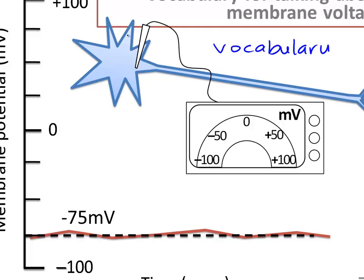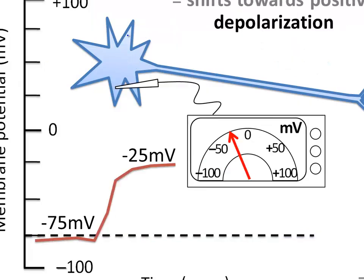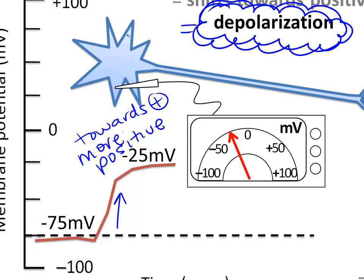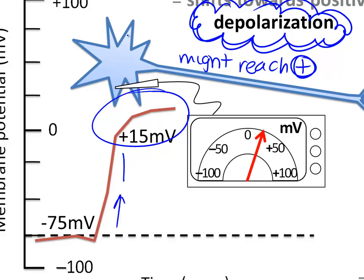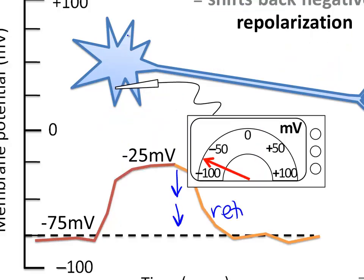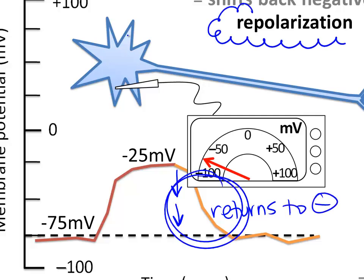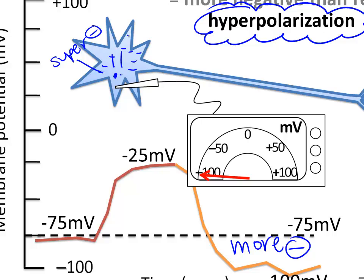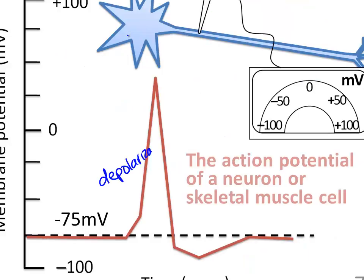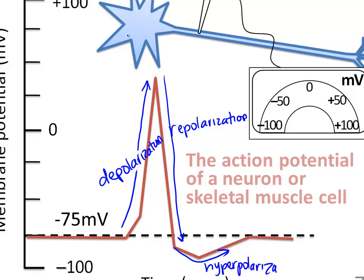Some vocabulary for action potentials: at resting potential, we are negative. Any shift toward zero or positive is called depolarization — the membrane may become positive or just less negative. When membrane voltage returns back toward negative, we call it repolarization. If it goes more negative than rest, as our neuron did, we call it hyperpolarization. In the graph, we can see depolarization, repolarization, a bit of hyperpolarization, then back to rest. Depolarization is all sodium in; rest and repolarization are all potassium out.